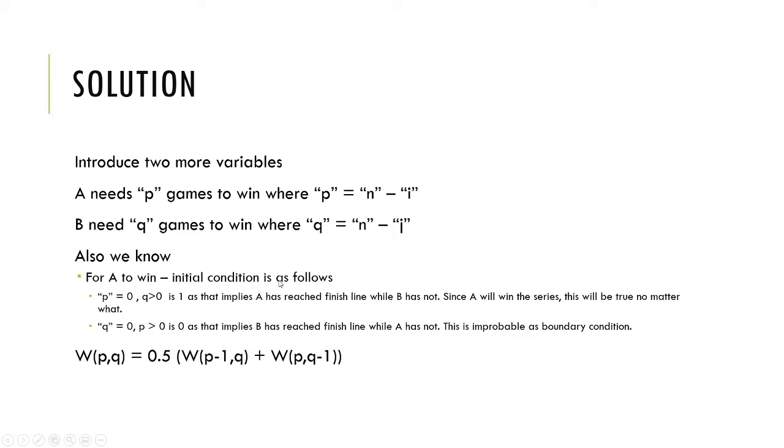Now for the initial conditions, we have to understand that if p equals 0 and q greater than 0, this means that A has reached the goal. A has already reached the goal whereas B has not. The boundary condition is that this probability is 1, where A has reached the finish line number of games needed to win and B has not.